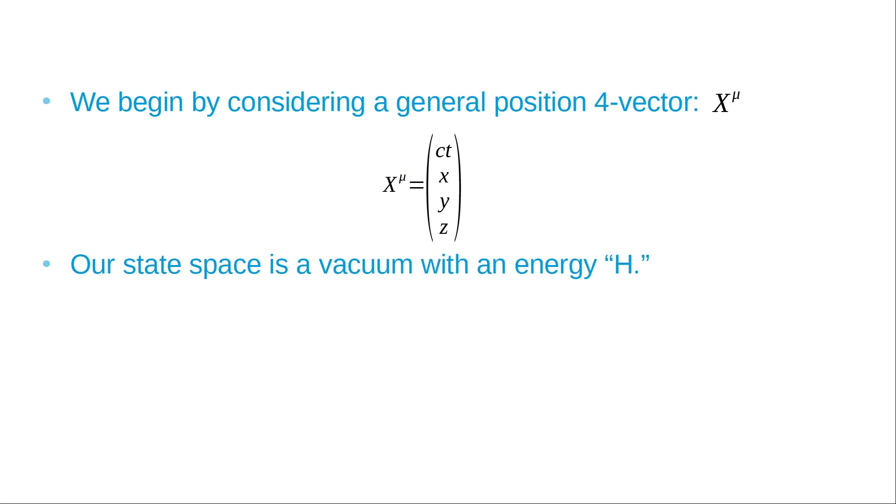Our state space is a vacuum with an energy H. This H is called the Hamiltonian, a complementary function to the Lagrangian. In this case, this is the sum of kinetic and potential energies, as opposed to the Lagrangian, the difference of potential and kinetic energy. Assuming our vacuum has no energy, the Hamiltonian H equals 0.